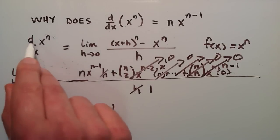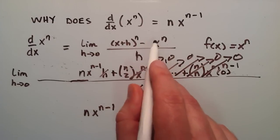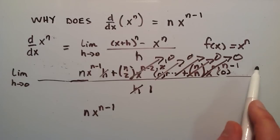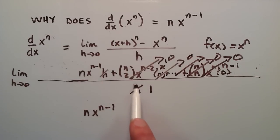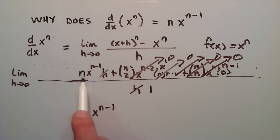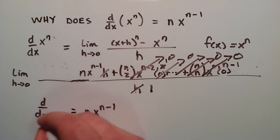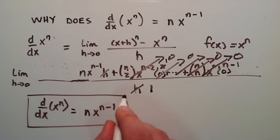So basically, we started out with the derivative of x to the n with respect to x, defined it using the limit definition, then expanded using the binomial theorem. We found that the first and last terms canceled, and once we divided by h, all the remaining terms went to 0 when we took the limit. The only term that remained was n times x to the n minus 1 — and that's really all there is to the proof.